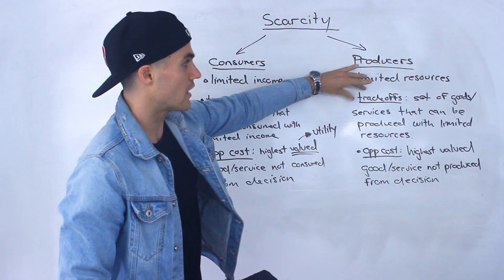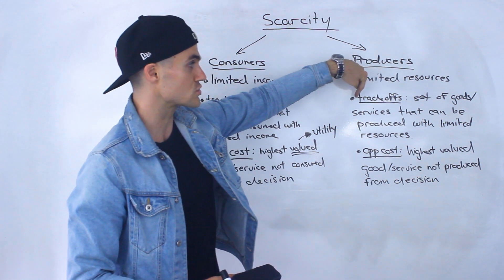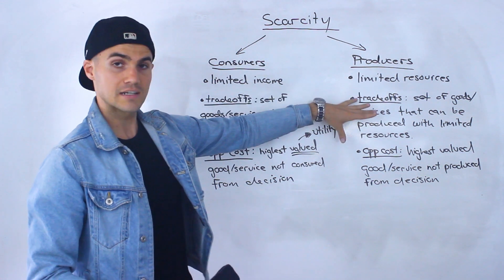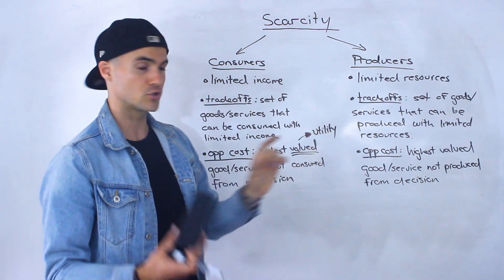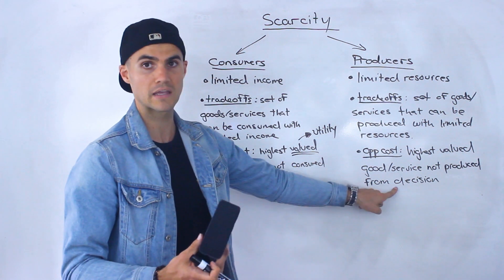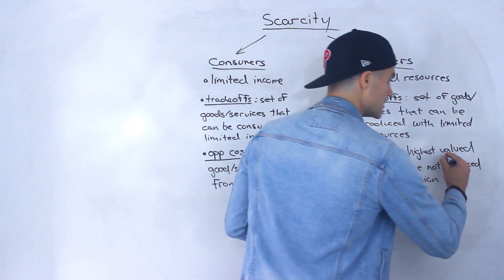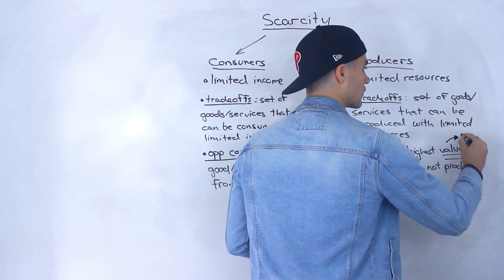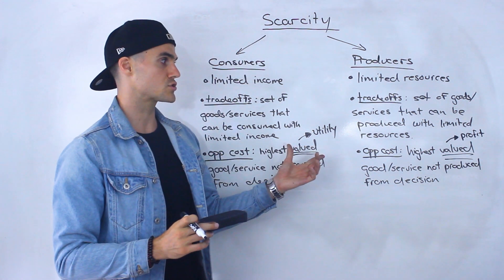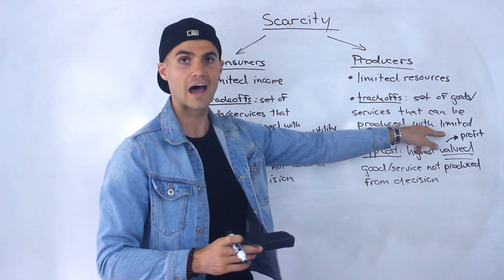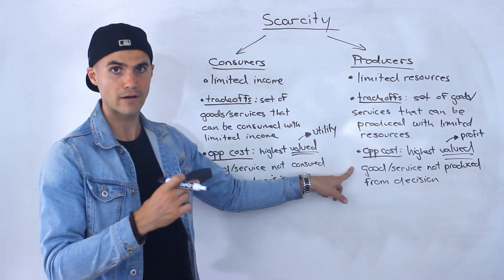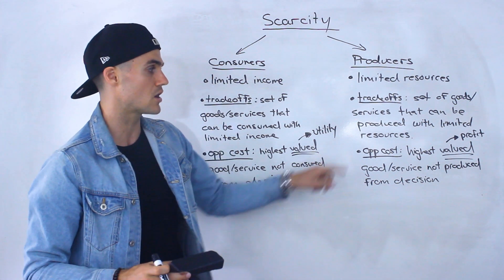From a producer's point of view, they face trade-offs because they have a set of goods or services that can be produced with limited resources. They have to make a decision, and once they do, the opportunity cost of producing a certain good or service is the highest valued good or service not produced. What do producers value? Profit. So they're going to choose the good or service giving them the highest profit, and the highest-profit good or service sacrificed by that decision is the opportunity cost.